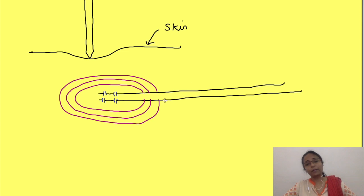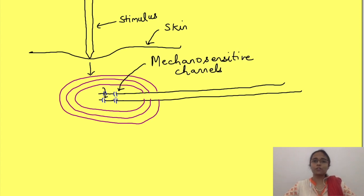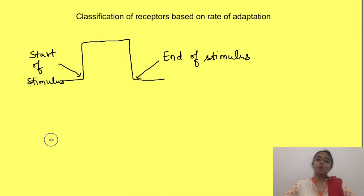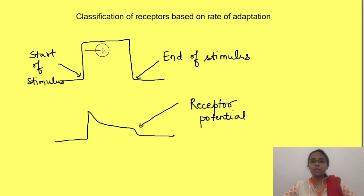For example, in mechanoreceptors, whenever there is deformation, mechanosensitive channels open, causing entry of ions and a change in potential in the receptor. The third classification of receptors is based on how fast or slowly they adapt. Adaptation is a decrease in the response of a receptor over time despite the stimulus being continuously present, and it is important for detecting the duration of the stimulus — that is, how long the stimulus is present.